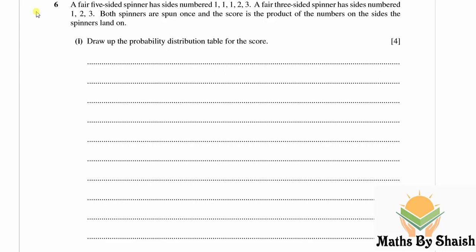This video is a continuation of the previous video where we solved the first five questions of May/June 2019, paper 9709/63, Probability and Statistics 1. Here we are going to solve the last two questions, that is the sixth and seventh. The sixth question: a fair five-sided spinner has sides numbered 1, 1, 1, 2, and 3.